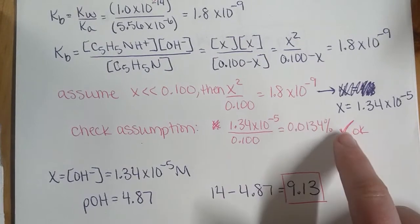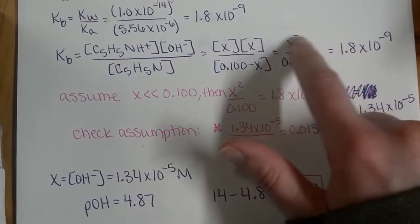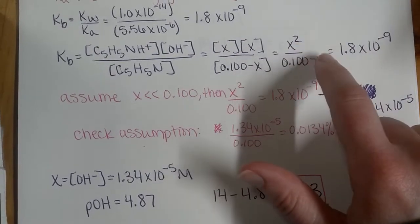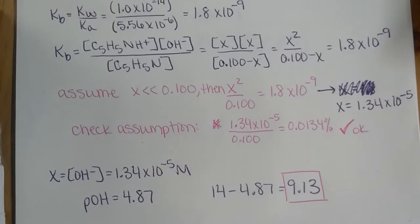Again, if the assumption is not okay, you're going to have to go back up to your starting equation and solve for X without eliminating that one. So you'll have to actually solve the quadratic equation there.